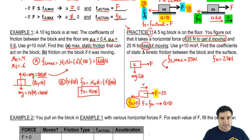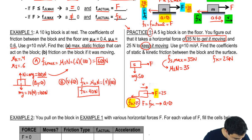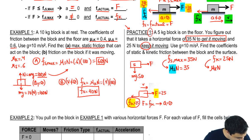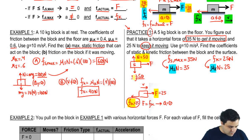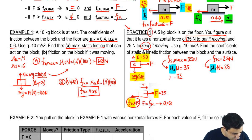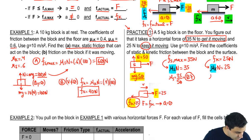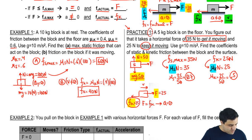Now I can expand: Fs max equals mu static times normal, so I can solve for mu static. Similarly, mu kinetic times normal equals 25, so I can solve for mu kinetic. The block has Mg going down with 50 and no other y-axis forces, so normal equals 50. Therefore, mu static equals 35 divided by 50 equals 0.7, and mu kinetic equals 25 divided by 50 equals 0.5. Those are the two final answers.